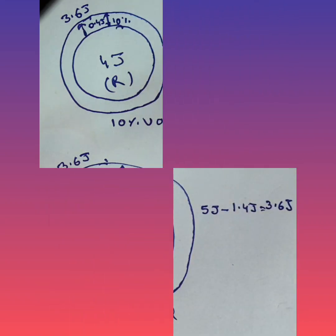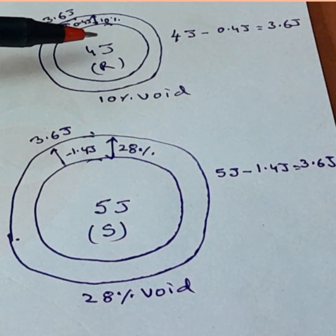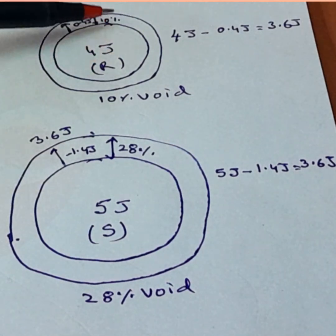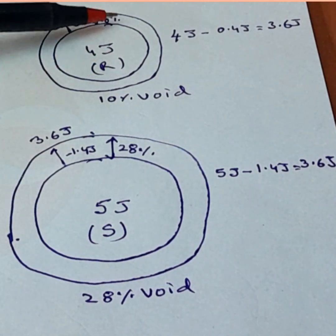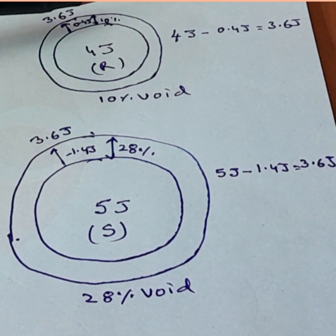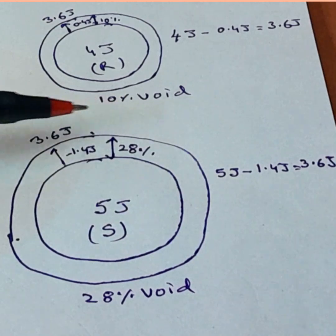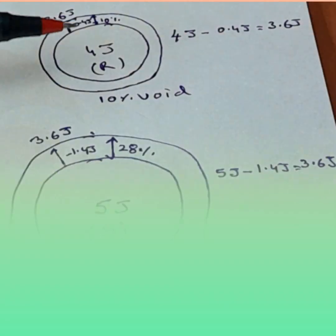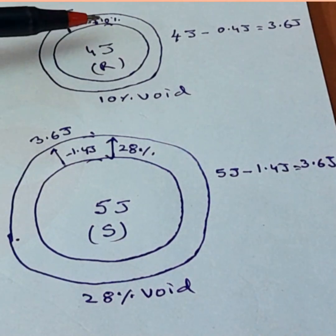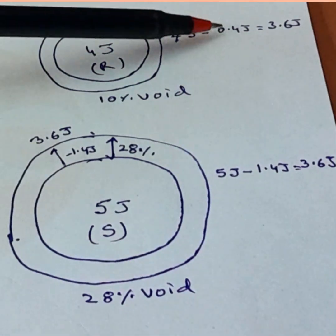Why subtract 0.4 joules here and 1.4 joules there? What happens is the R enantiomer has to travel 10 percent of the distance to supply energy to the cavity, whereas the S enantiomer has to travel 28 percent. As a result, it loses 10 percent of its total energy in one case and 28 percent in the other — hence the subtractions. Mathematically, I tried to show how two enantiomers can produce the same stimuli and same odor.